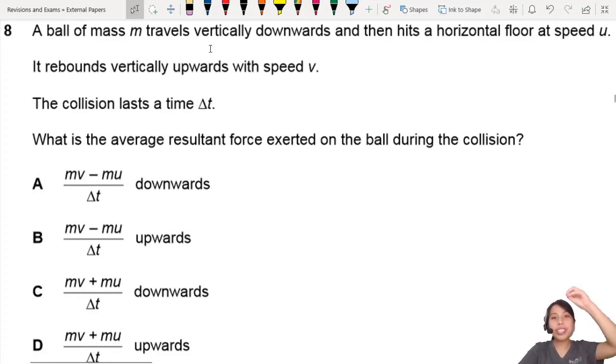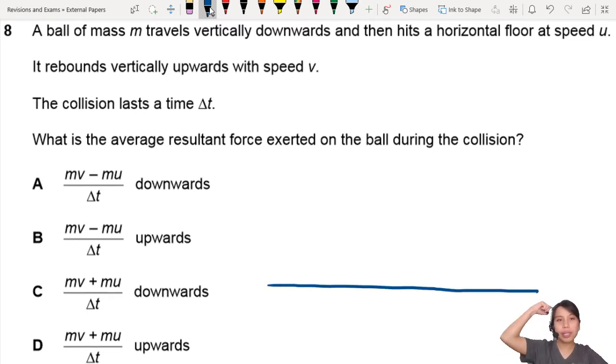A ball of mass M travels vertically downwards and hits the floor and it rebounds. Let's draw this out. Collisions without pictures is a disaster waiting to happen.